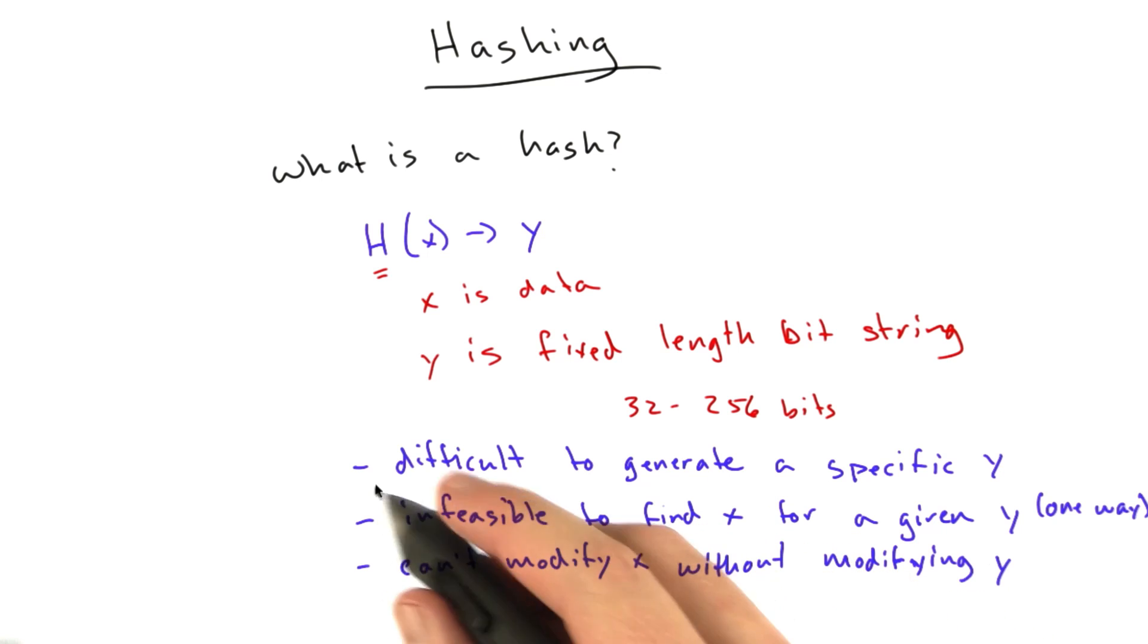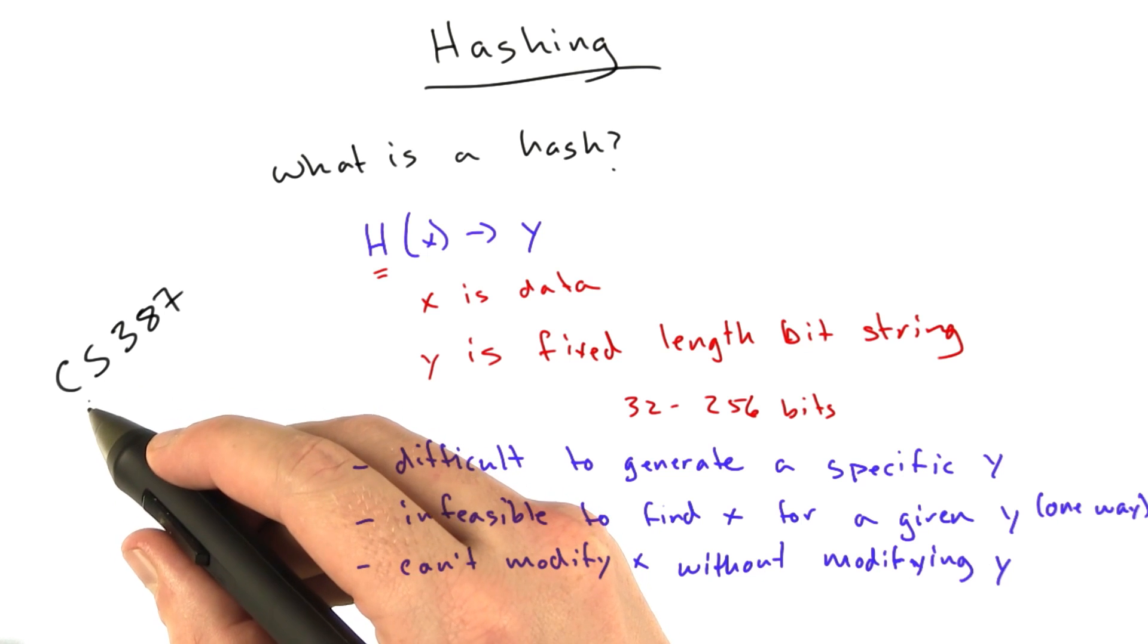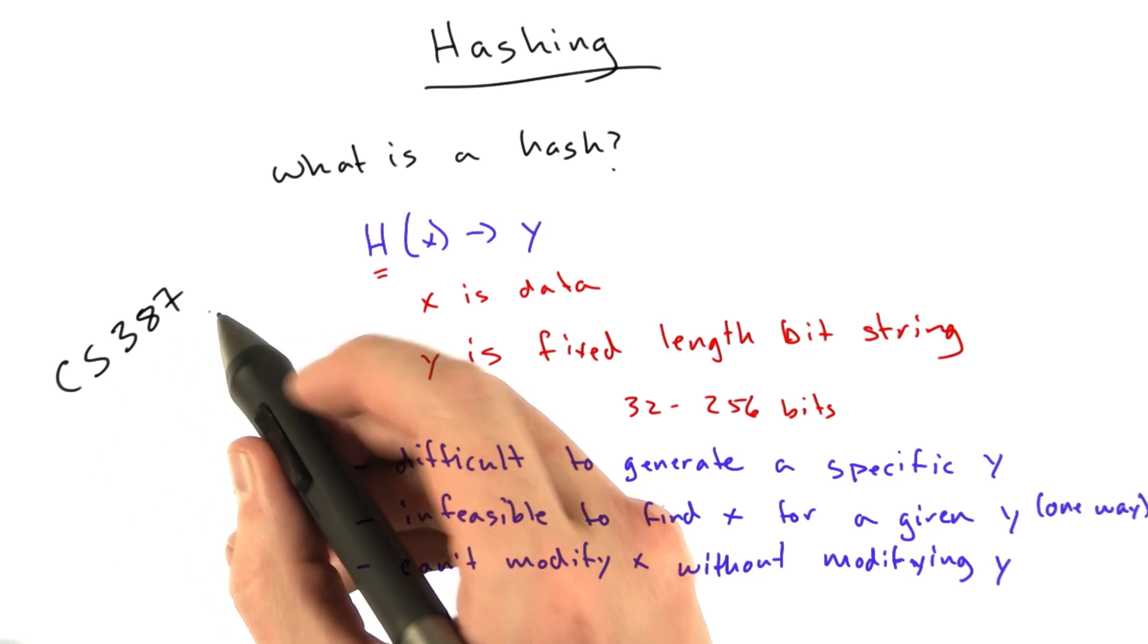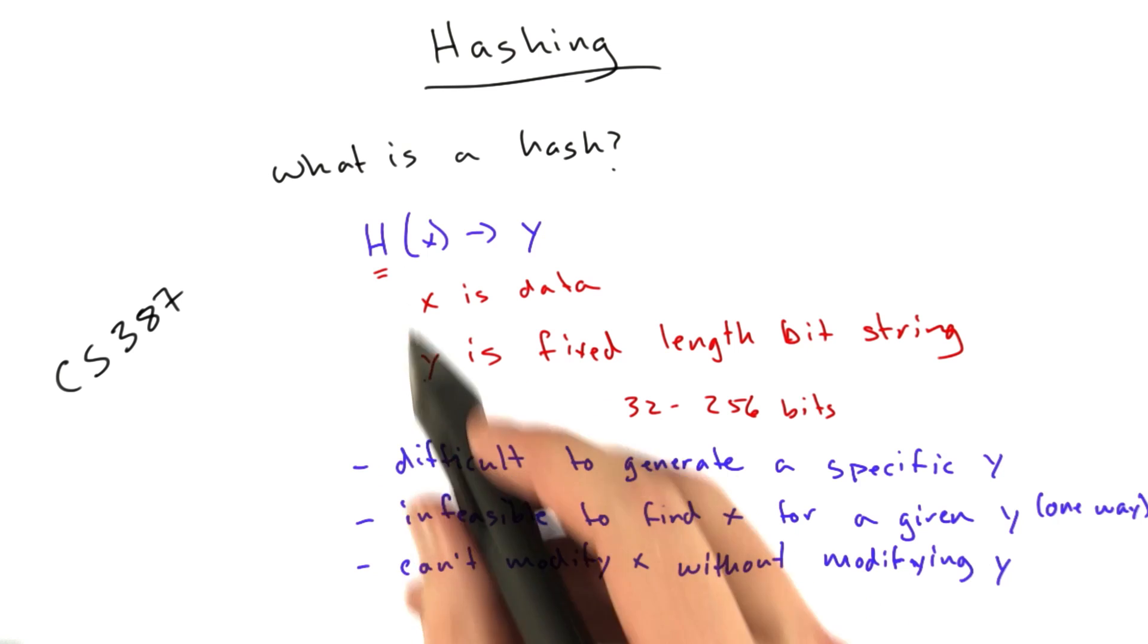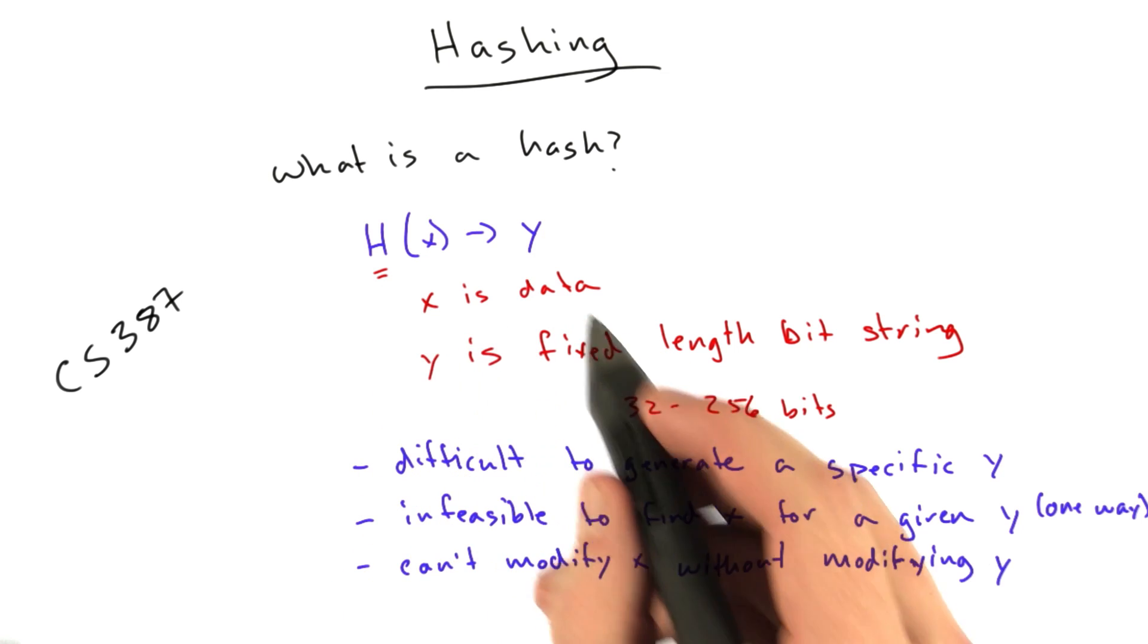And if you would like to learn about those things, you should take CS387, which is applied cryptography. And you'll learn about hashes to death. We are going to use hashes quite a bit in this lecture because it's a really handy way of verifying data.